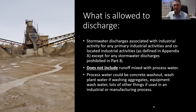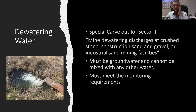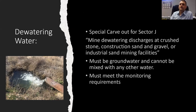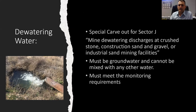Any industrial activity in any sector that processes things and uses process water — you're not allowed to discharge that. There's a special carve-out in Sector J for mine dewatering, specifically for industrial sand, crushed stone, and construction sand and gravel mining activities. You're allowed to discharge dewatering water without an individual permit, but it has to be groundwater, can't be mixed with any other water, and you have to meet the monitoring requirements for that discharge.